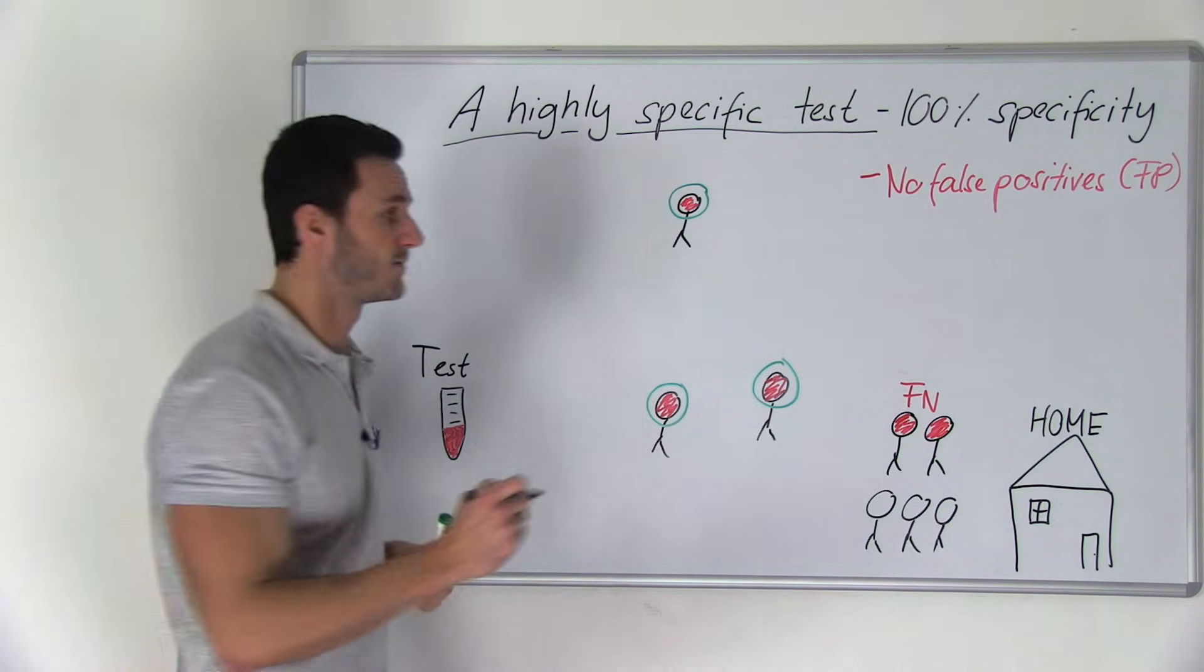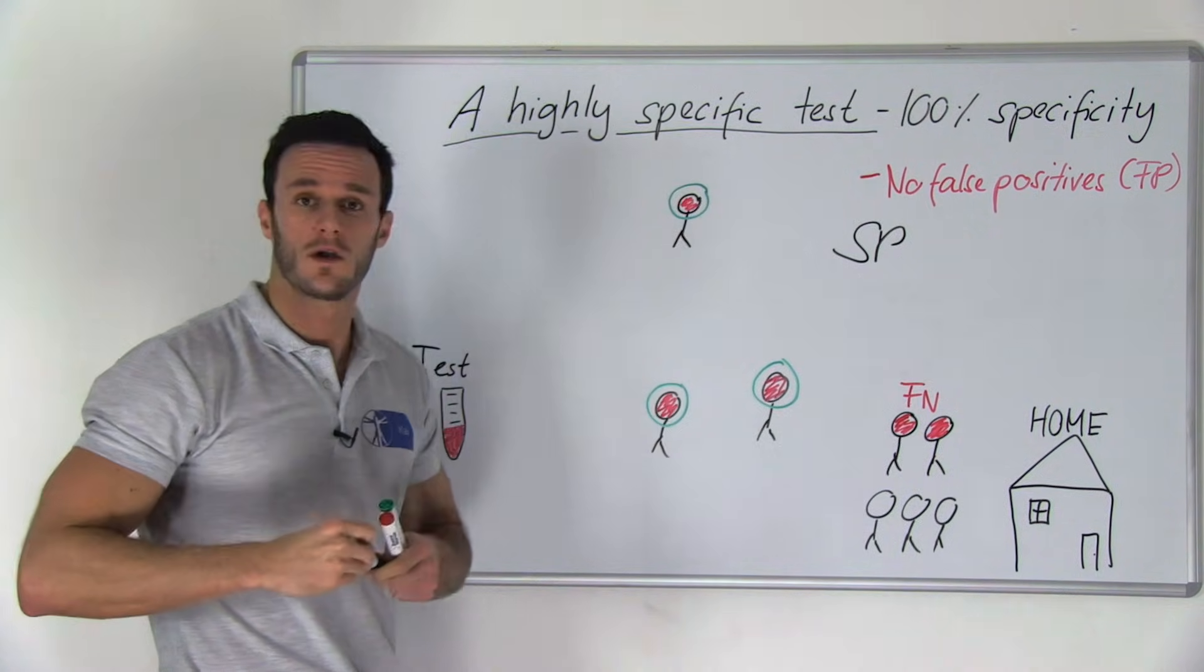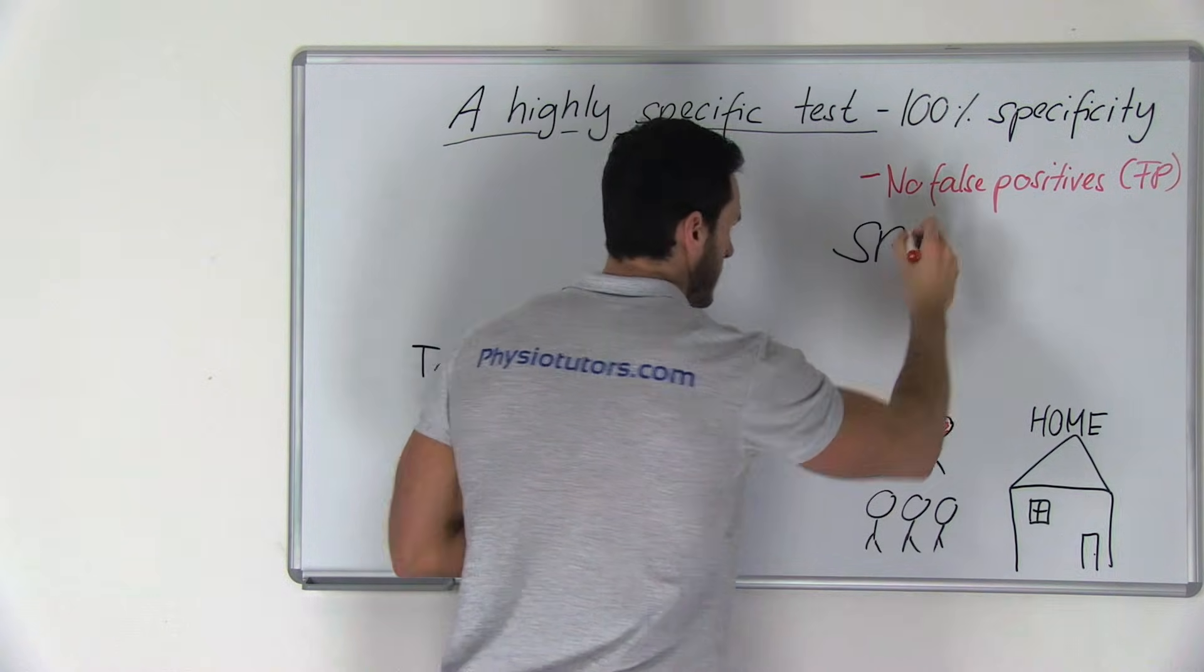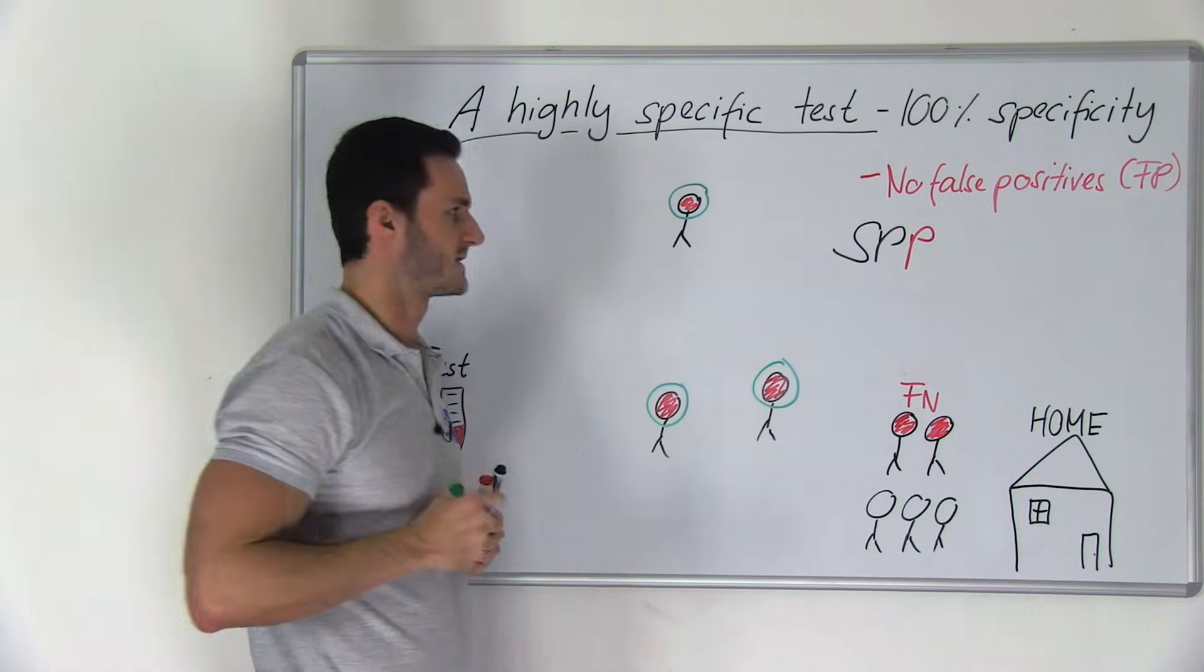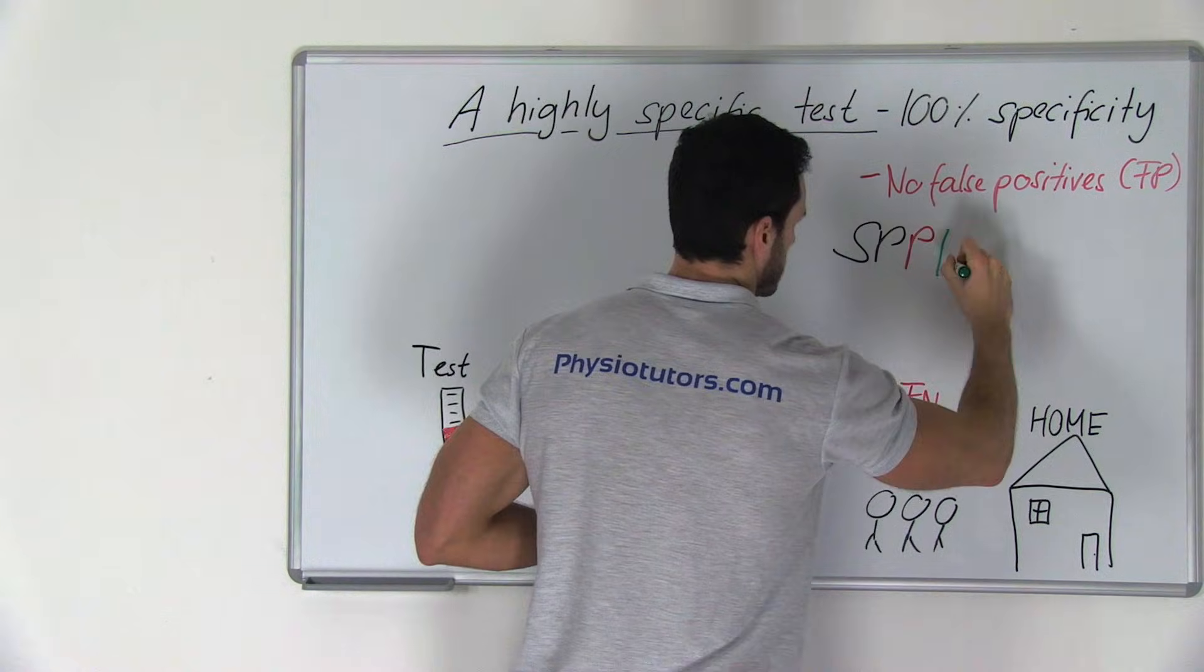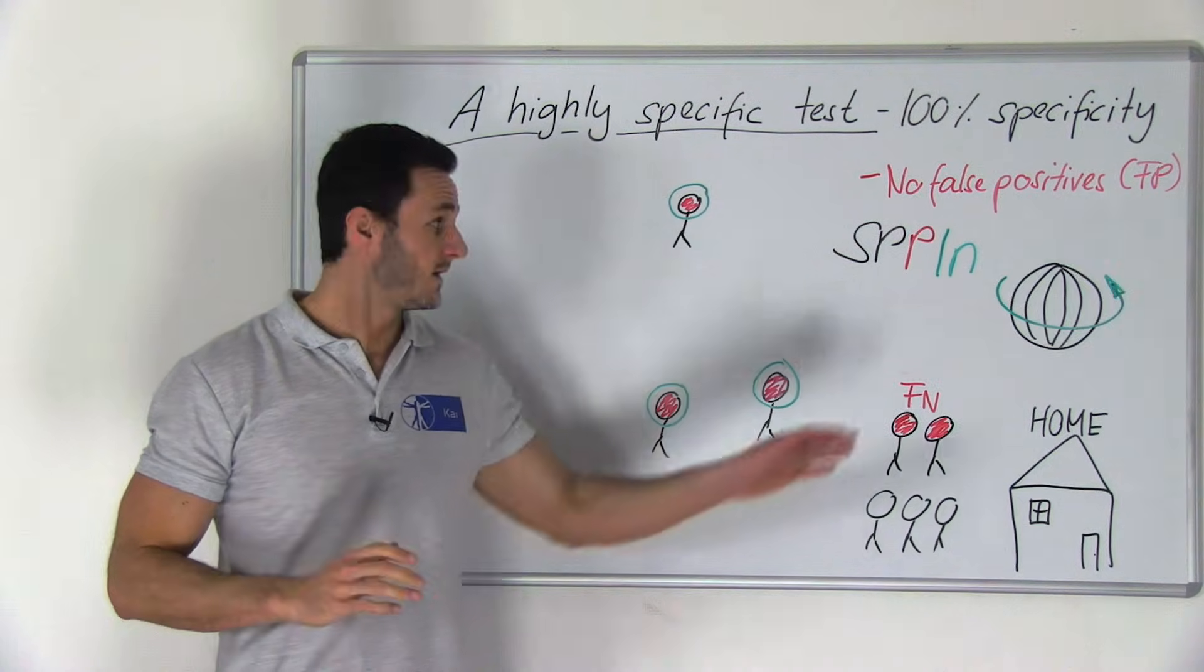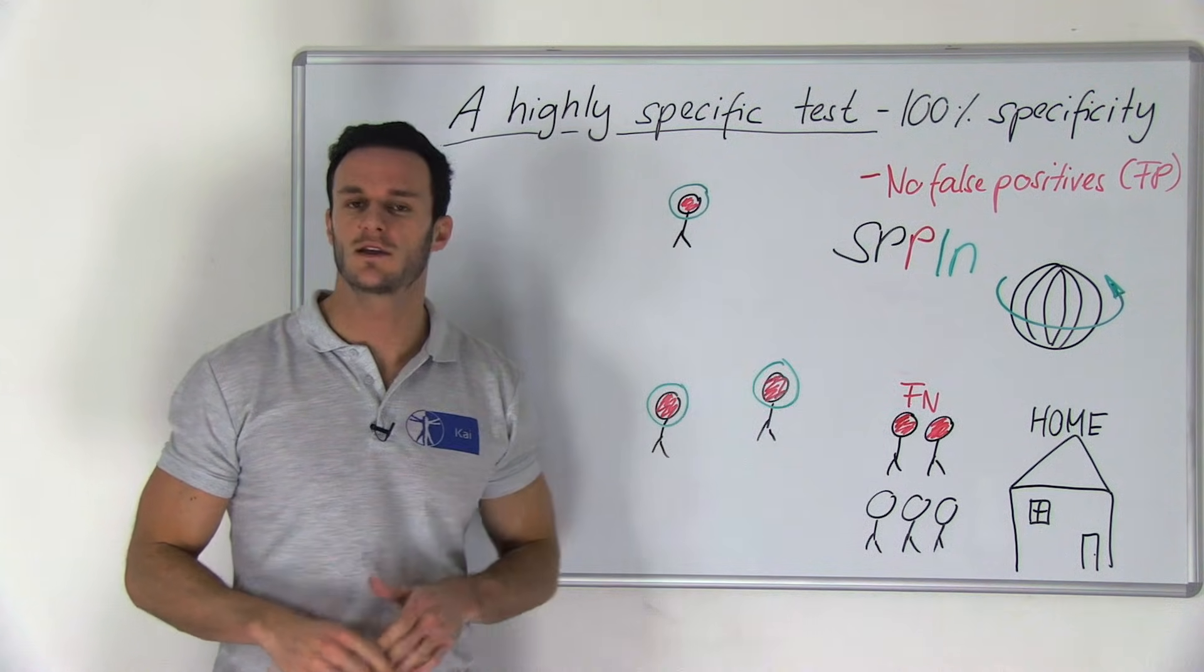In a highly specific test, abbreviated as SP, you are therefore looking for a positive test result in order to include or confirm your hypothesis. SPIN, like in the spin of a basketball, is the mnemonic that you should remember.